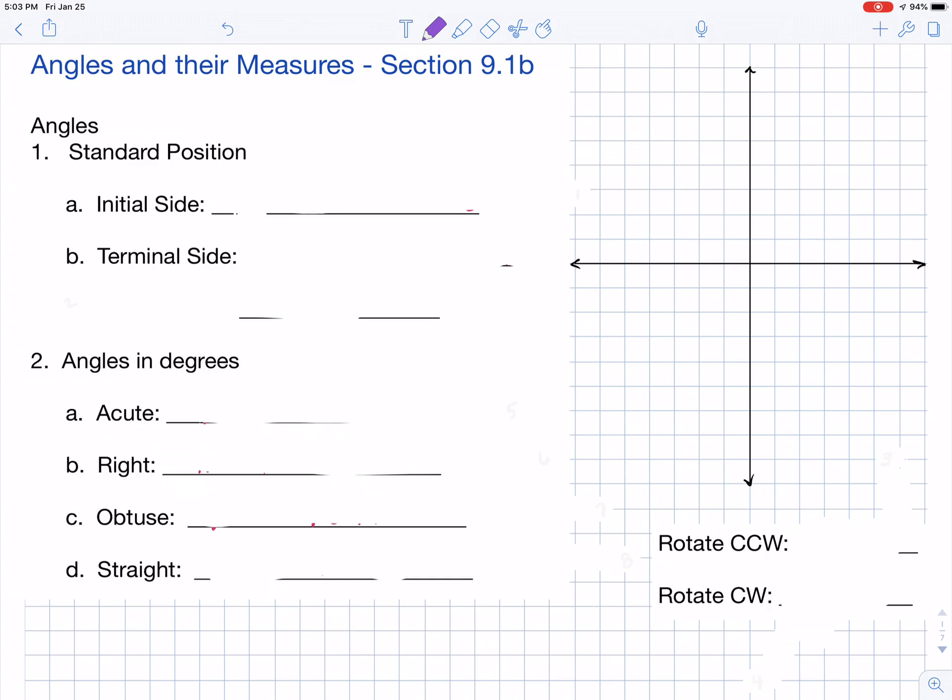The initial side is always going to lie along the positive x-axis, so you can go ahead and put a ray there on the positive x-axis.